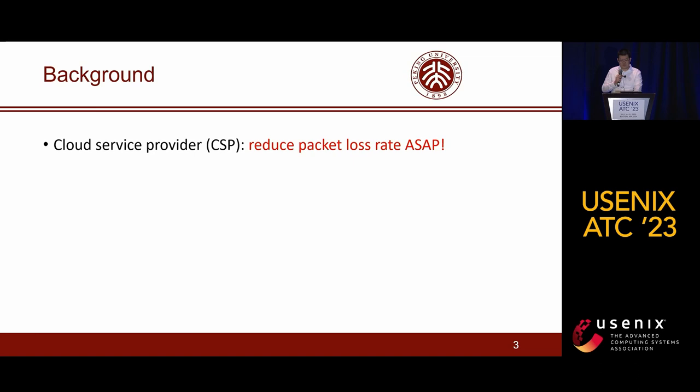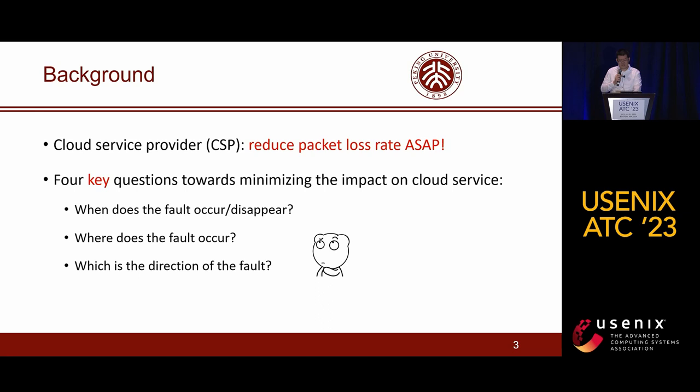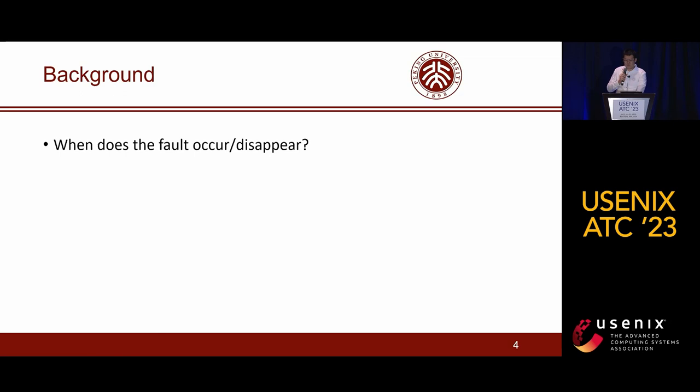For cloud service providers, their primary goal is to reduce the packet loss rate as quickly as possible. To this end, there remain four key questions to answer. The first three questions provide guidance on how to circumvent faults and reduce packet loss rate, and the fourth question pertains to automating this process. Let's look into the four questions one by one.